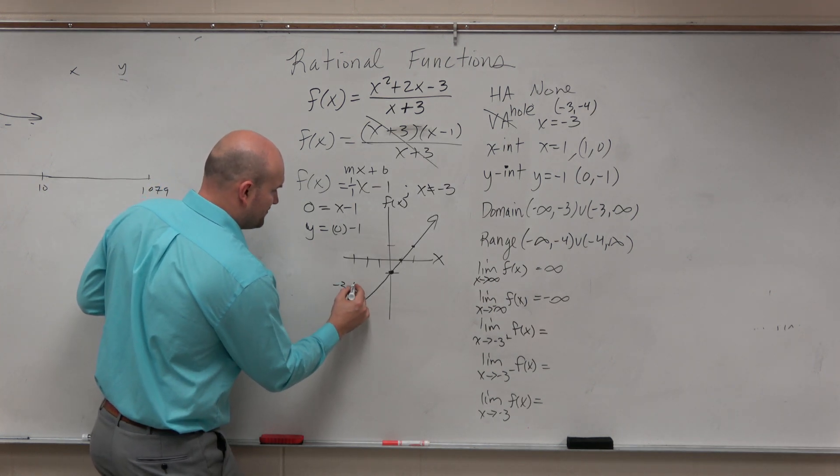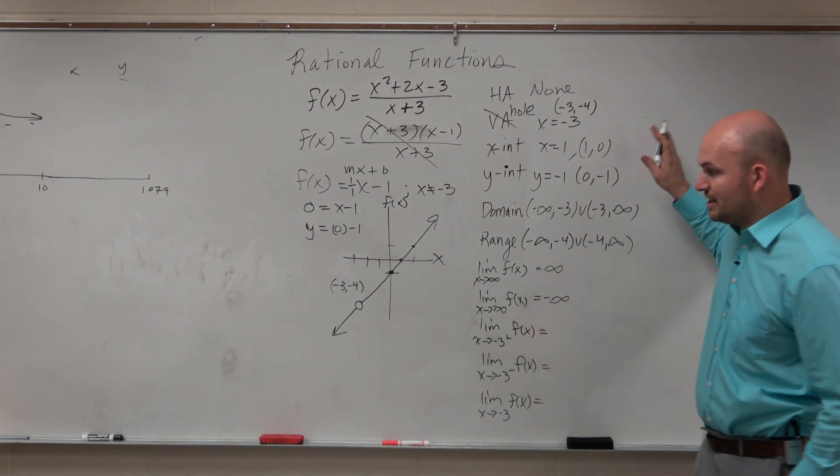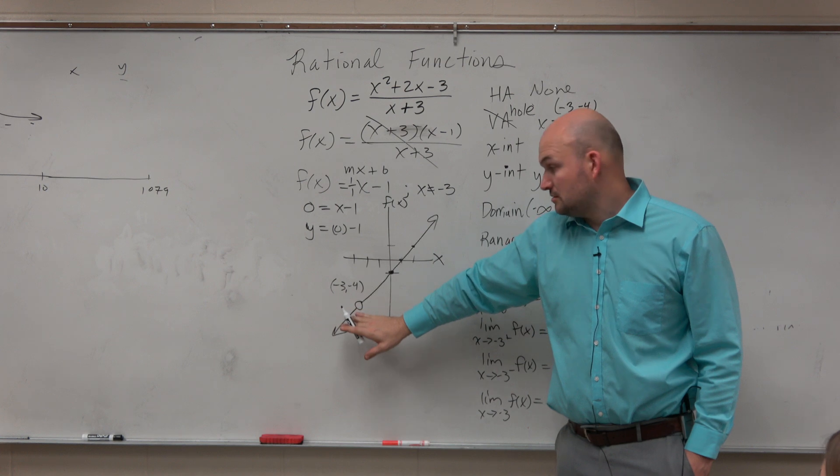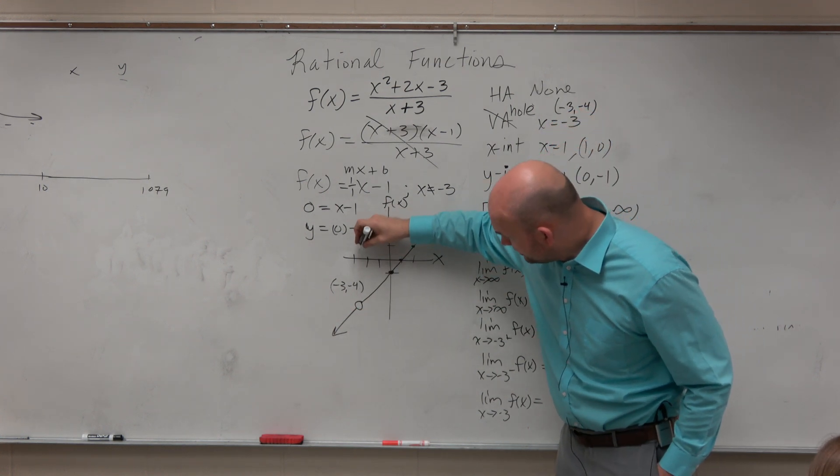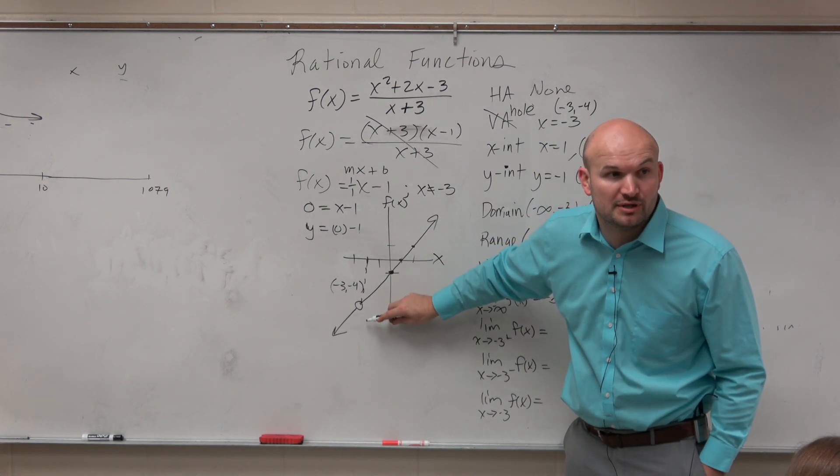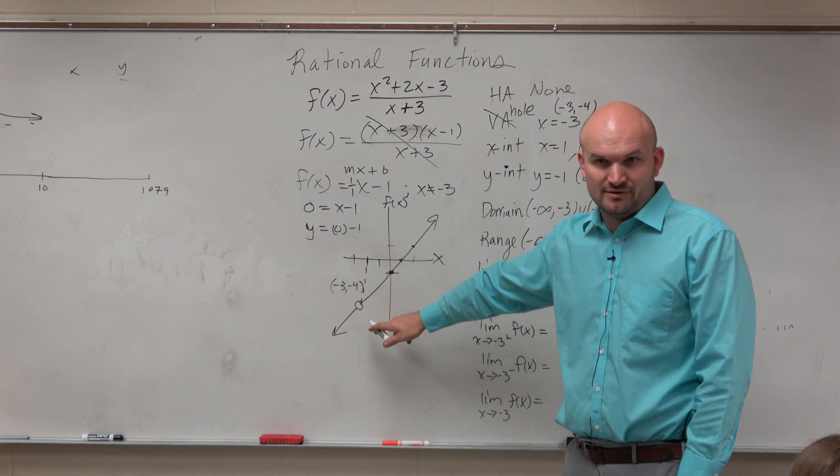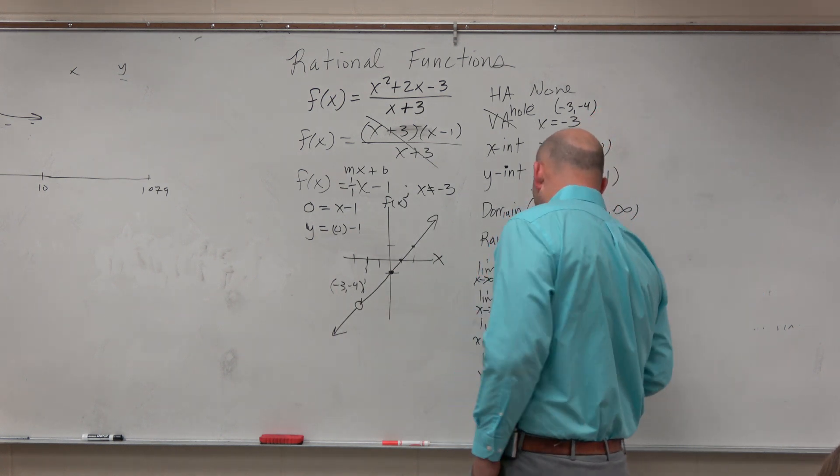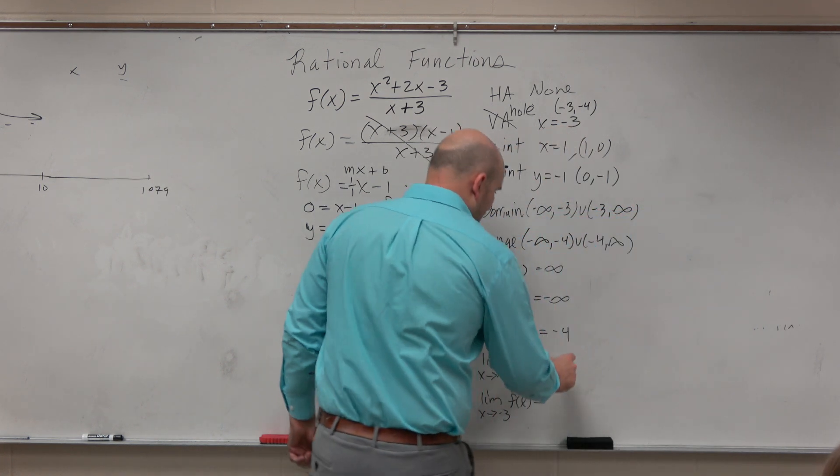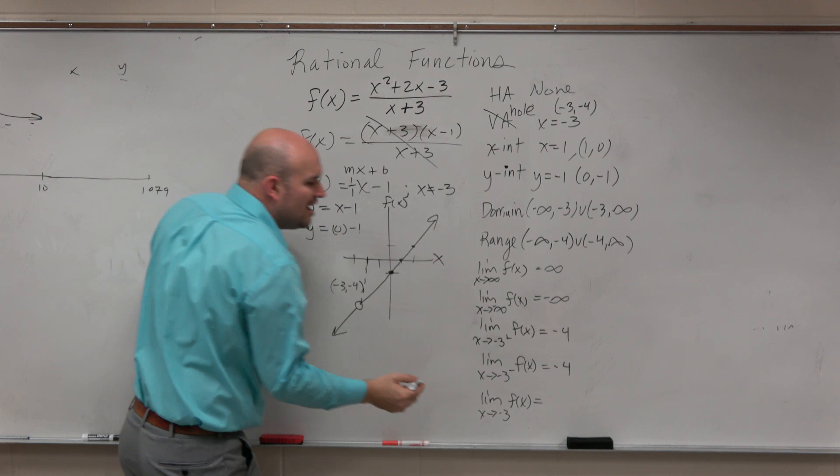Remember, this point is negative 3 comma negative 4. Right? So as I'm approaching negative 3 from the right, what value, what f of x value am I getting closer and closer to? No, no. As I'm approaching negative 3. Here's negative 3 right here. As I get closer and closer to negative 3, there's a hole there. But what value am I getting really, really close to? Negative 4. Is it equal to negative 4? No, there's a hole there. It's not equal to anything, right? That's a hole. But it's equal to negative 4. What about the left side? As I approach negative 3 from the left, what value am I getting really, really close to? Negative 4. Negative 4. Oh, OK. What about if I take both my hands and go from the left and the right? What value am I approaching? Negative 4. Oh, negative 4.